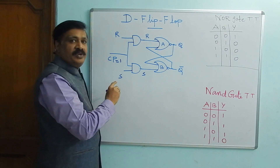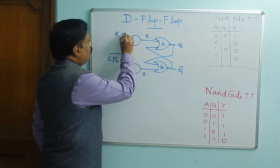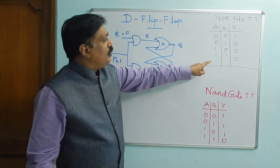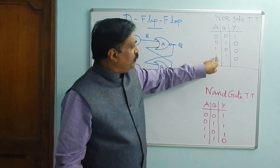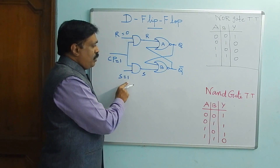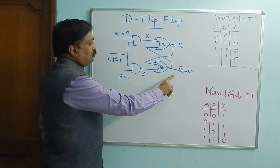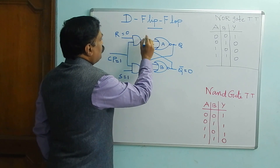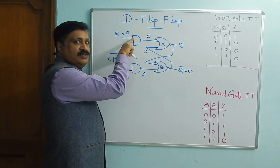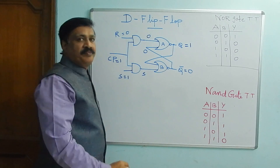Clock pulse is always 1 in order to work this SR flip-flop. Now when S equal to 1, R equal to 0 — according to the NOR gate truth table, when any one of the inputs is 1, the corresponding output is 0. Therefore, you are giving 1 here and 1 here, so the corresponding output is 0. This 0 goes here, so both inputs to the AND gate are 0, and AND gate produces 0.